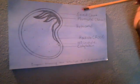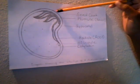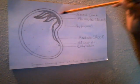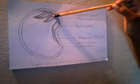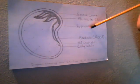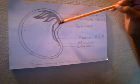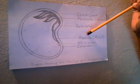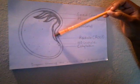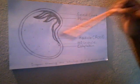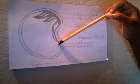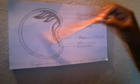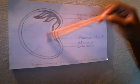The parts of the seed are: the testa, the plumule, the hypocotyl, the radicle, the micropyle, and the cotyledon.